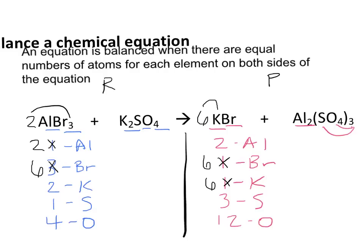I currently have balanced the Aluminum and the Bromine atoms, but it's still visible that my Potassium, my Sulfur, and my Oxygen are not balanced. Now, when you're balancing chemical equations, you need to think mathematically.